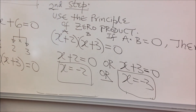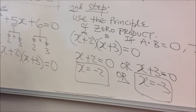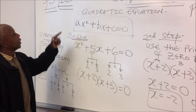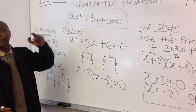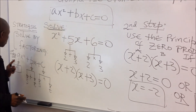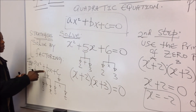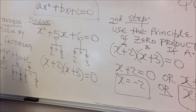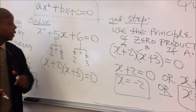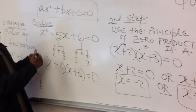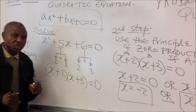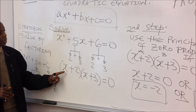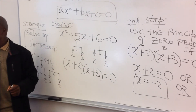The first step in the strategy is to identify whether a equals 1 in the quadratic equation. If a equals 1, focus on the b and c values. In this problem, b is 5 and c is 6. Find two numbers that multiply to get 6 — which are 2 and 3 — and also add together to get 5.